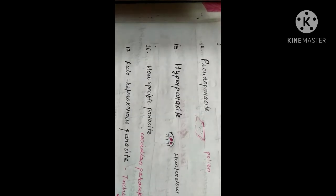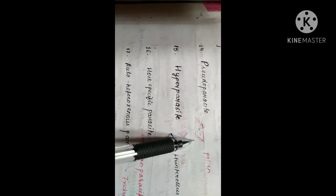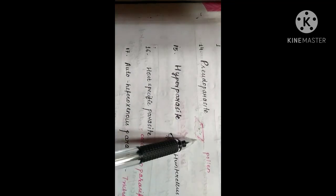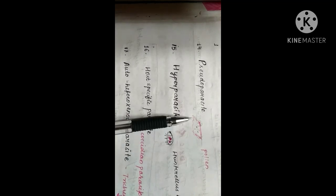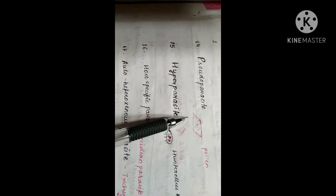The next parasite based on host range is pseudoparasite. The pseudoparasite is not actually a parasite, as the name indicates — pseudo. Pseudoparasites are objects which appear like parasites in tissue sections or in feces; they give a resemblance of parasites. For example, pollens — many times in fecal samples there are pollens present which can appear like pseudoparasites.